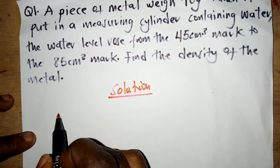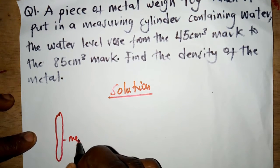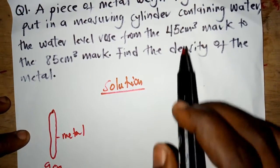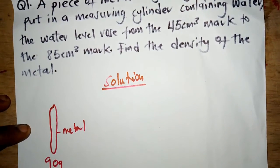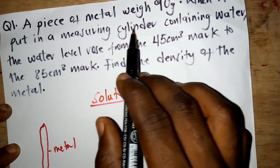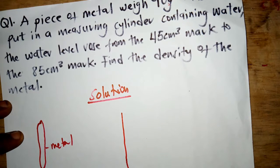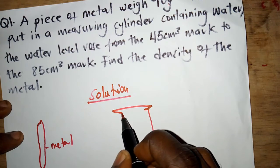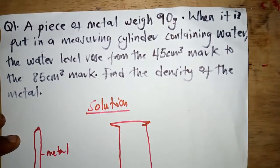Let's sketch something to help solve this question. We have a metal — this is the metal and it weighs 90 grams. Now when it is put in a measuring cylinder, let's do a simple sketch of the measuring cylinder containing water.